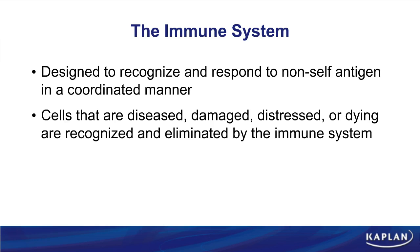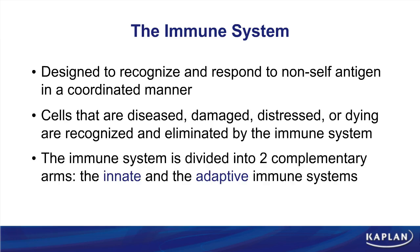When we think about the immune system, we are always going to talk about them being divided into two complementary arms — the innate and the adaptive. We really are going to stress though that these two arms are not mutually exclusive from one another, but rather provide each other with necessary signals to clear an infection.